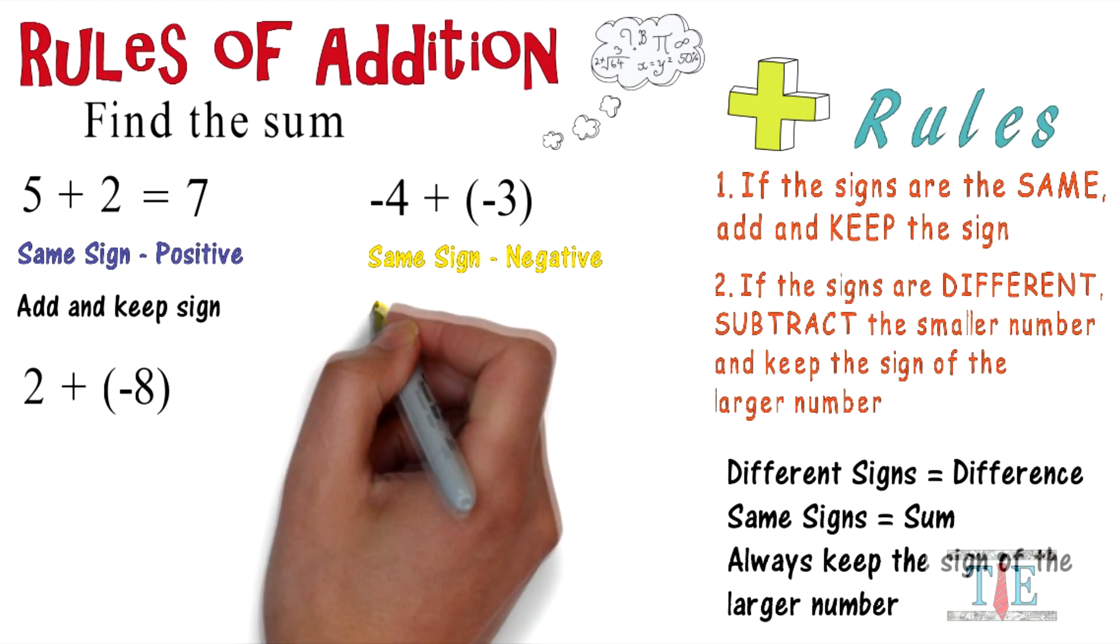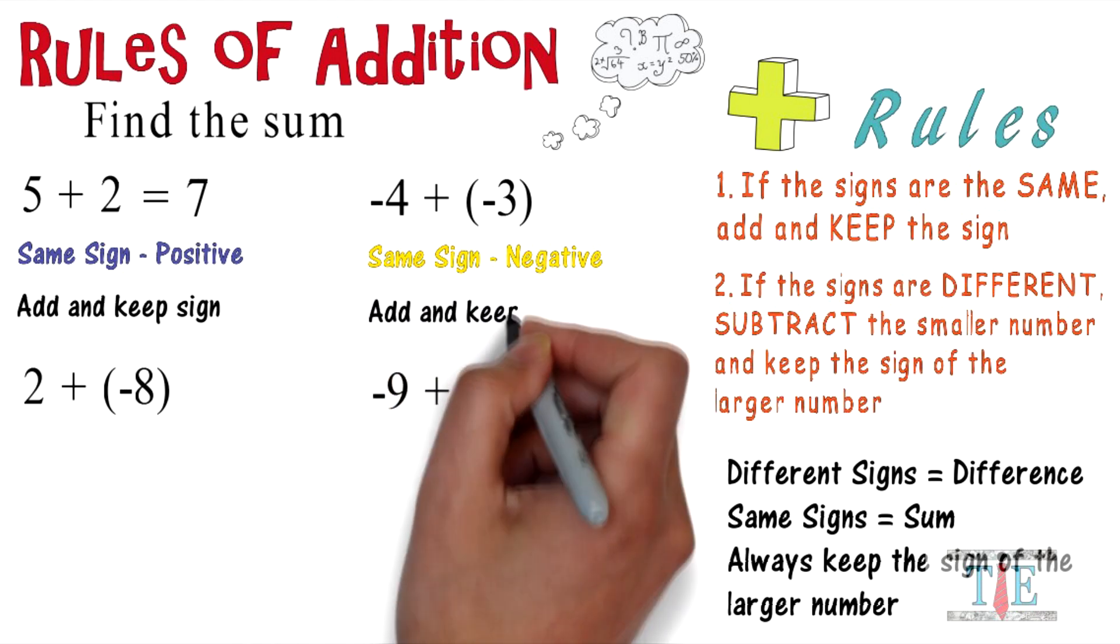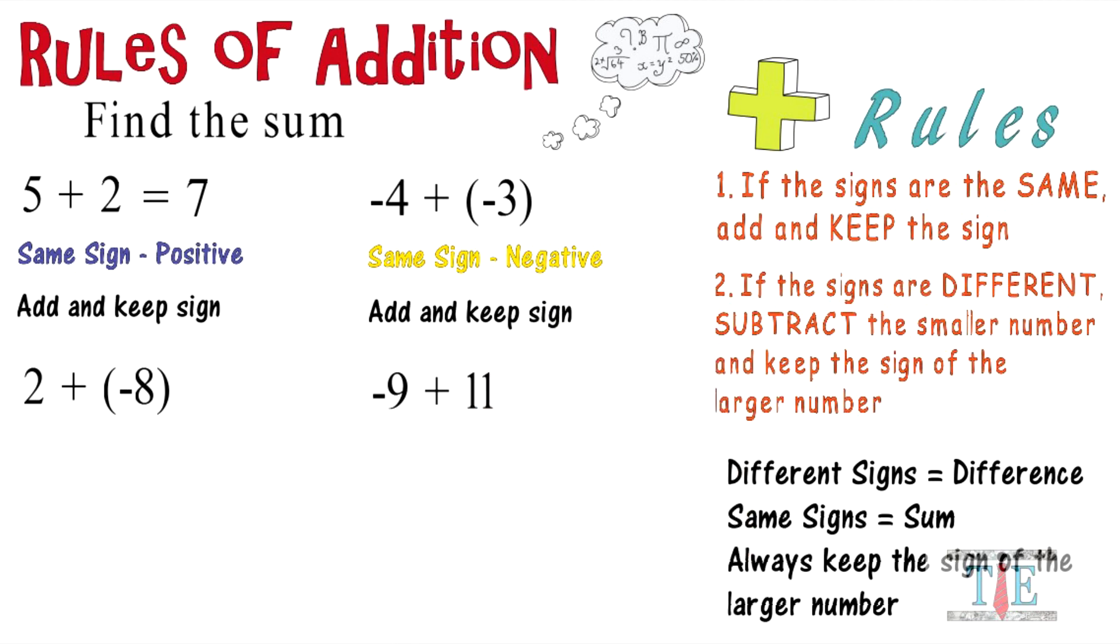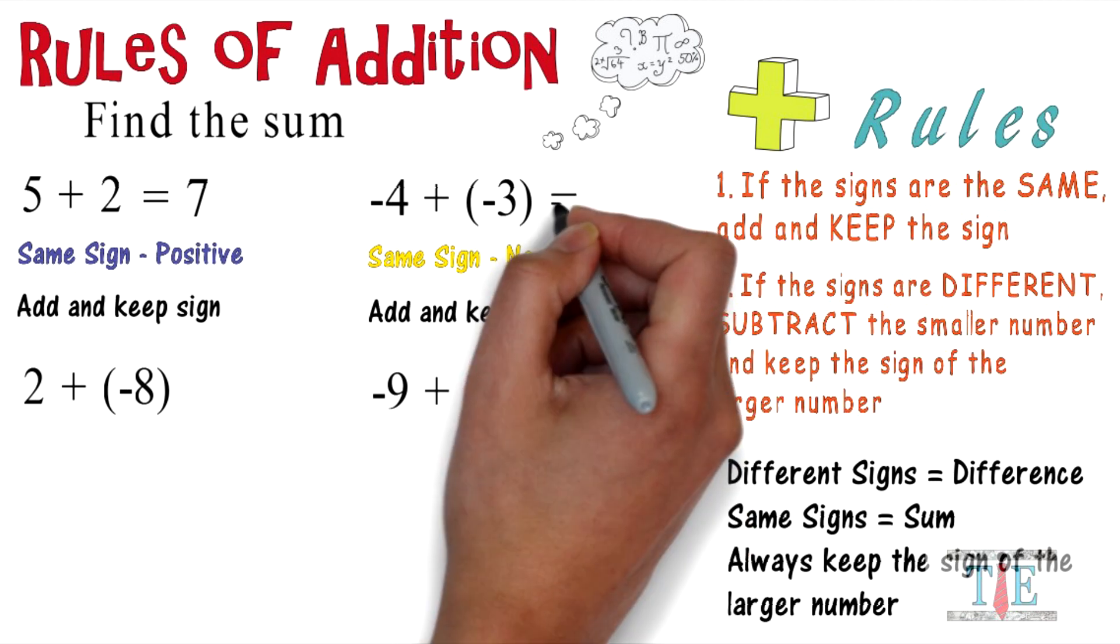Here we add and keep the sign. Again, four plus three is seven, and don't forget the negative.